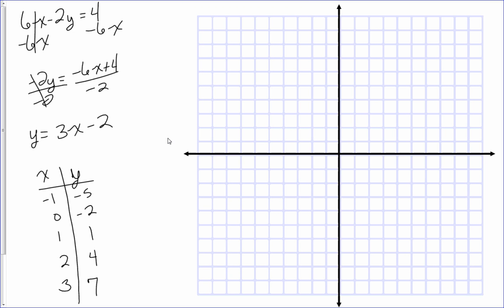We plot those points: negative one, negative five; zero, negative two; one, one; two, four; three, seven. All of those points line up in a straight line, which makes sense because this is the equation of a line. All of these points in the table are called solution points — they satisfy, or are solutions to, our equation.